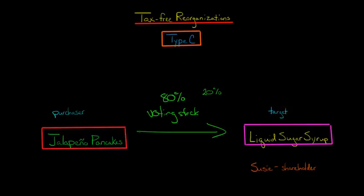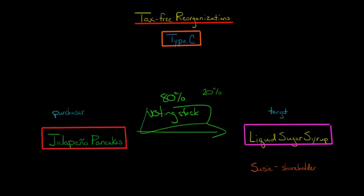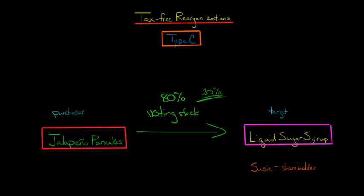If they're assuming so many liabilities from the target that the amount of liabilities actually exceeds 20% of the total consideration being given, then basically Jalapeno Pancakes has no choice but to give voting stock. But generally speaking, we don't have that liability situation — they can do 80% voting stock and up to 20% cash, property, or something else.